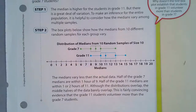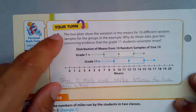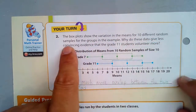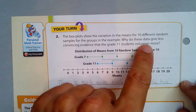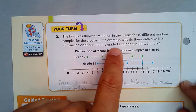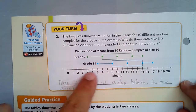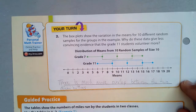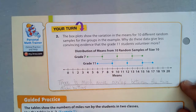Using this information, here's the Your Turn question: the box plots show the variation in the means of 10 different random samples for the groups in the example. Why do these data give less convincing evidence that grade 11 students volunteer more? As we look at this, there's a lot of overlap between the two distributions. Much more overlap is what makes this less convincing evidence.